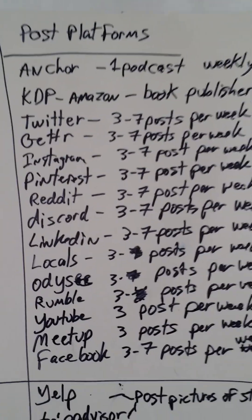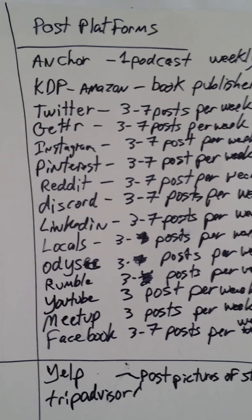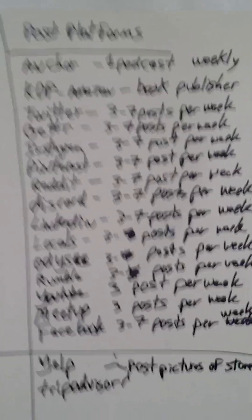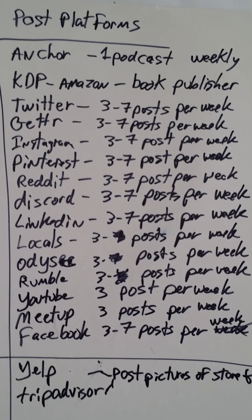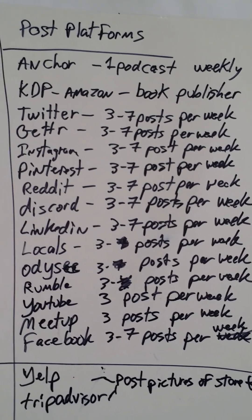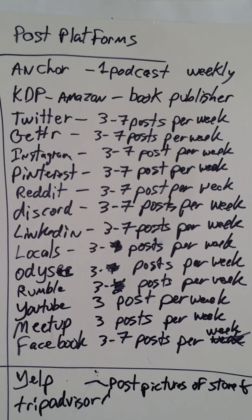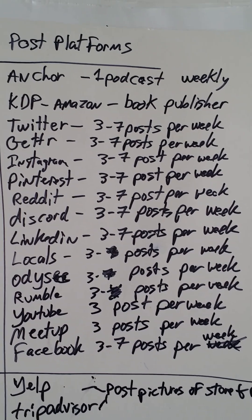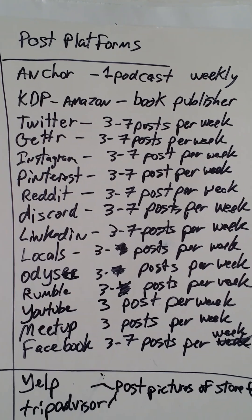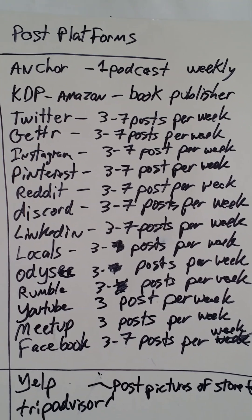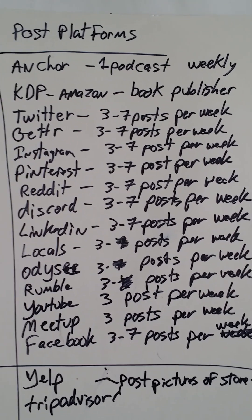Now let's talk about posting platforms — where and how to post. Anchor is a podcast platform where you would podcast weekly. KDP is where you create books. For Twitter, take the images and videos you have, chop them into one-minute sections, and do three to seven posts per week.